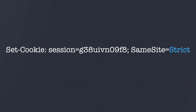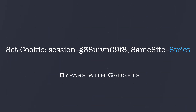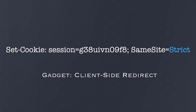Finally, let's see what your options are if you face the same-site attribute set to strict. In this case, browsers won't include it in cross-site requests. However, you might bypass this using a gadget that triggers a secondary request within the same site. One such gadget is a client-side redirect that uses attacker-controlled input, like URL parameters, to construct the redirect target. Browsers treat these as ordinary same-site requests, including all site-related cookies despite restrictions. By manipulating this gadget, you can create a malicious secondary request, effectively bypassing same-site cookie restrictions.